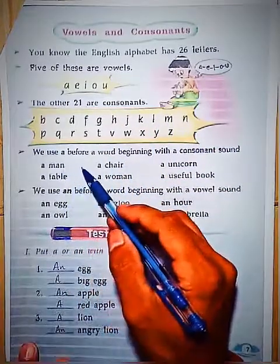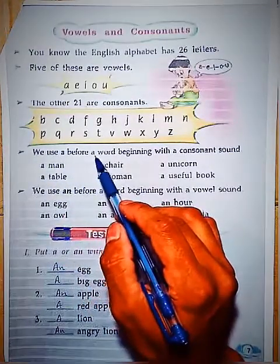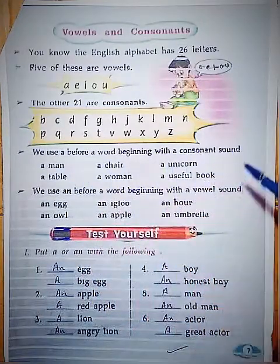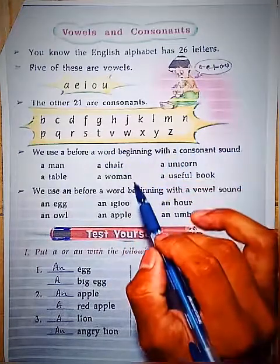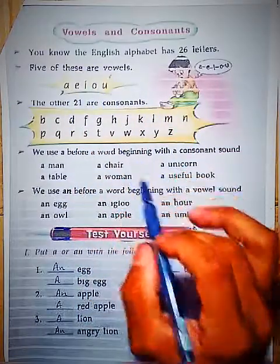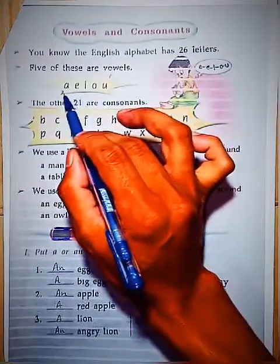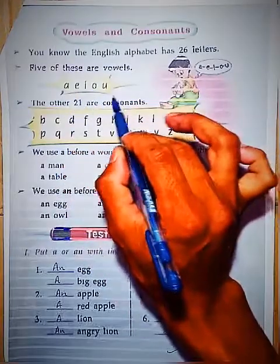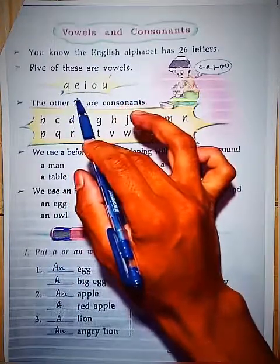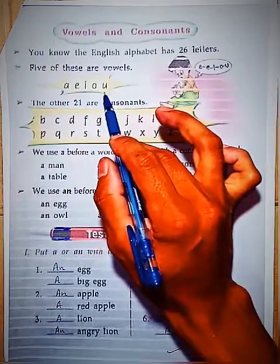Now, here it says: we use 'a' before a word beginning with a consonant sound. We are talking about sound here. The vowels are a, e, i, o, u — you need to listen to their sounds. 'a' gives the sound 'a', 'e' gives 'e', 'o' gives 'o', and 'u' gives 'u'.